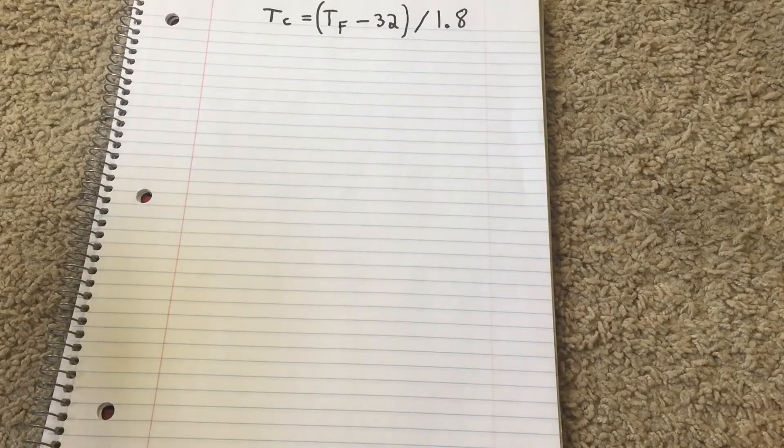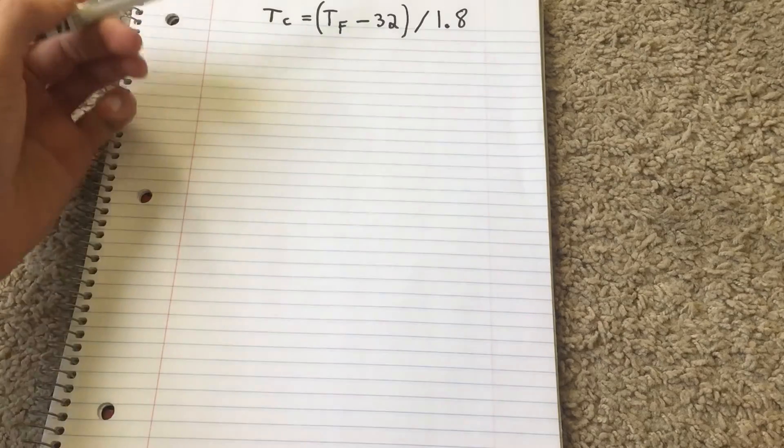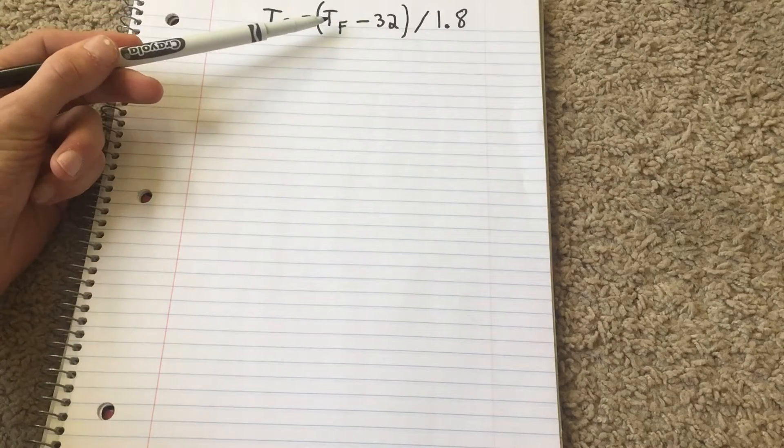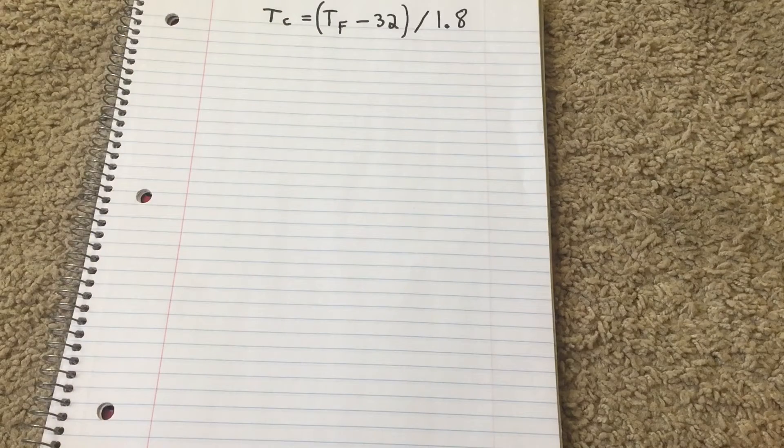Hello everyone. Today we're going to be converting Fahrenheit to Celsius. This is the basic equation where you have your temperature in Fahrenheit minus 32, and then divided by 1.8.